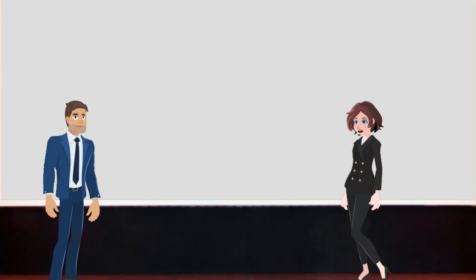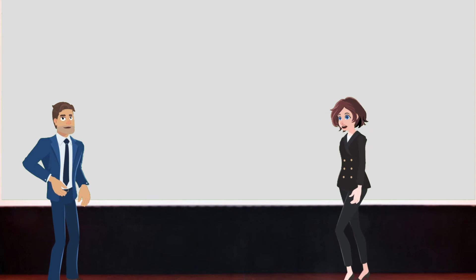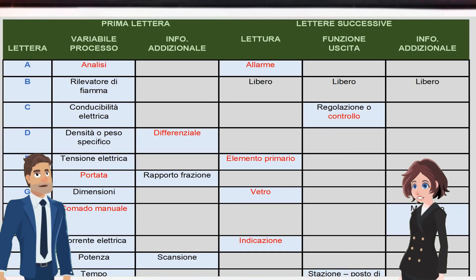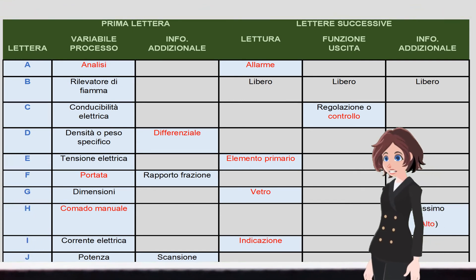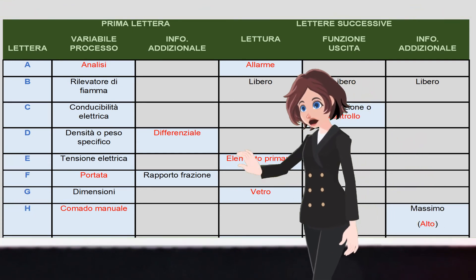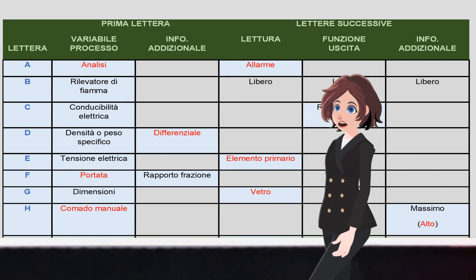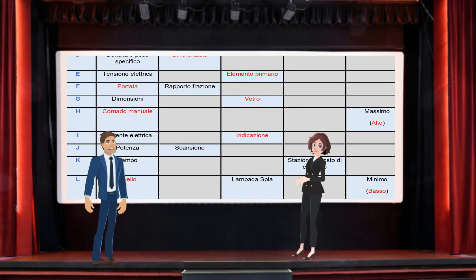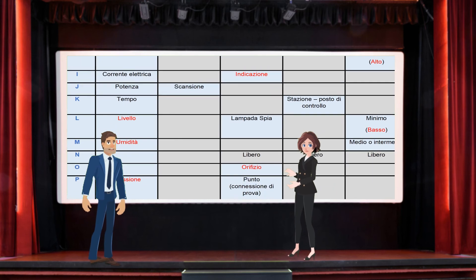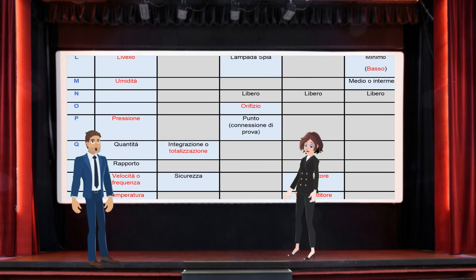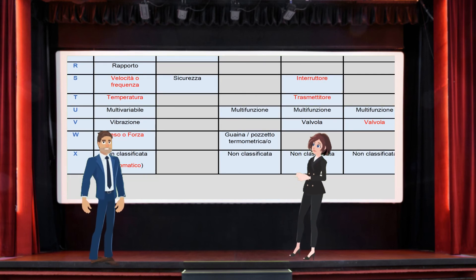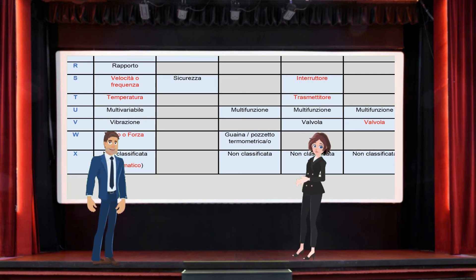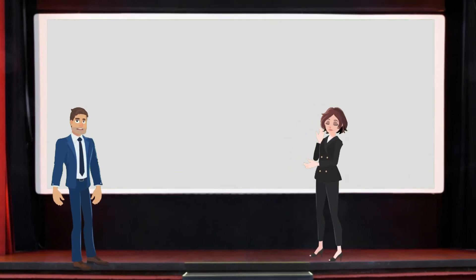Each instrument is identified through a combination of letters where the first letter represents a process variable. Some examples are: P for pressure, T for temperature, Z for position, A for analysis, F for flow rate, L for level, and so on. The second letter defines what the instrument does and what it is — for example, I for indication, C for control, T for transmitter, A for alarm, S for switch. From the third letter onward, additional information is indicated, for example L for low, H for high, V for valve.